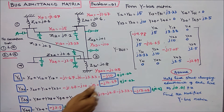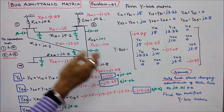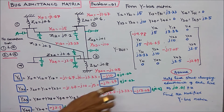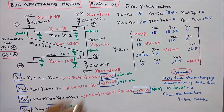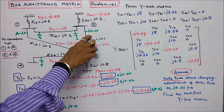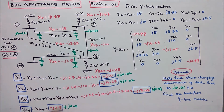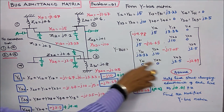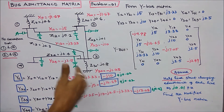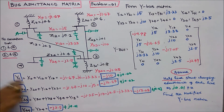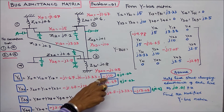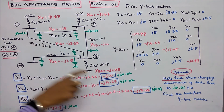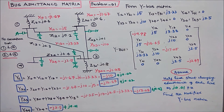In the same problem, assume a half-line shunt charging admittance of j0.01 per unit for each line. We need to find the modified Y bus matrix. The off-diagonal elements remain the same; only the diagonal elements change. Y11 = −j10 + j0.01 + j0.01 = −j9.98.